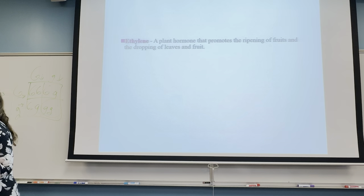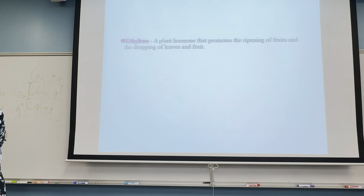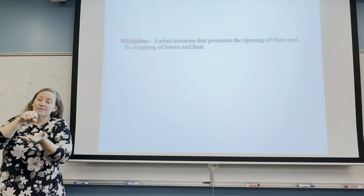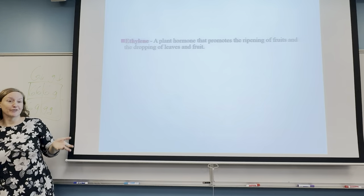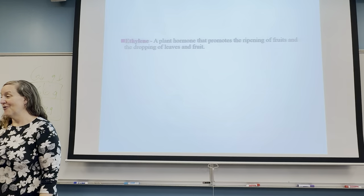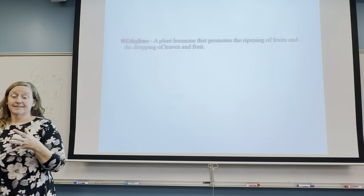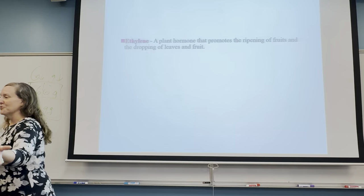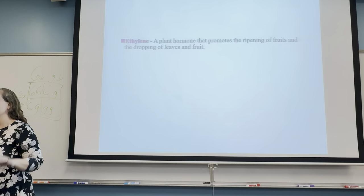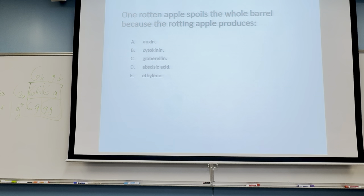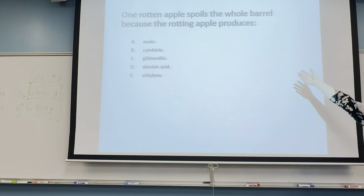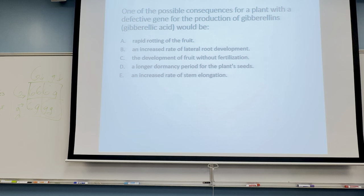If fruit starts to ripen, you can move it to another room. The saying 'one rotten apple spoils the whole barrel' is because the rotting apple produces ethylene. For a plant with a defective gene for gibberellin production, the likely consequence would be a longer dormancy period for plant seeds — since gibberellins promote germination. Increased stem elongation would only be true if the plant had gibberellins, so that answer is incorrect.